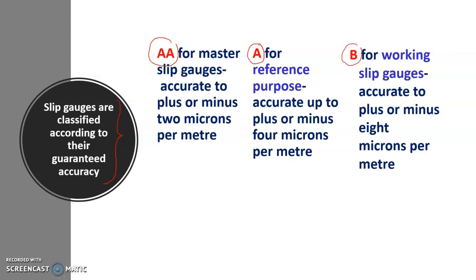AA means slip gauges that are accurate to plus or minus two microns per meter. For A grade the accuracy level will be plus or minus four microns per meter, and for B it is plus or minus eight microns per meter. That is one type of classification of slip gauges.